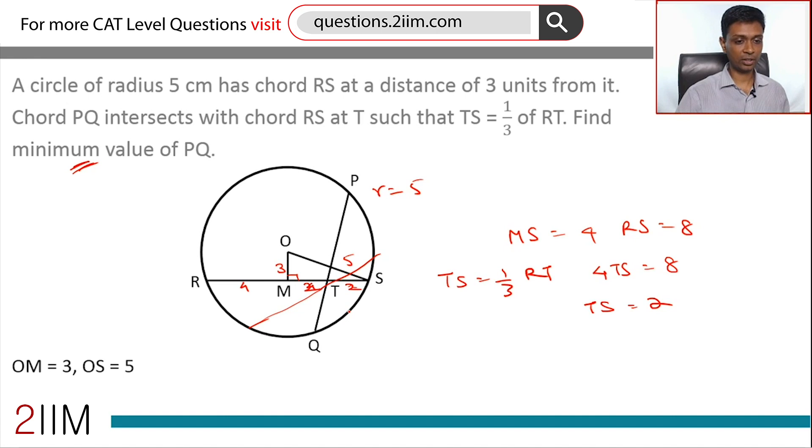Whenever two chords intersect, the product of the rectangles formed by the chords are equal. What does that tell us? RT into TS equals PT into TQ. RT into TS is 6 into 2, which equals PT into TQ, or PT into TQ is 12.